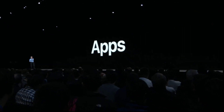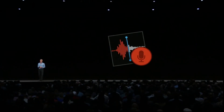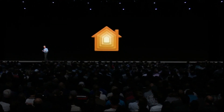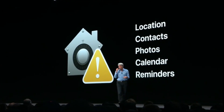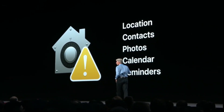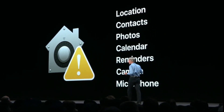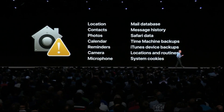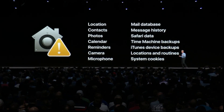We are bringing News, Stocks, Voice Memos, and Home to the Mac. We believe your private data should remain private. macOS already provides API-level protections for contacts, photos, calendar, and reminders. Now in Mojave, we're extending these protections to include your camera and microphone, as well as protecting sensitive parts of your file system like your mail database, your message history, and your backups. All of this is protected by default for any app you run on the system.